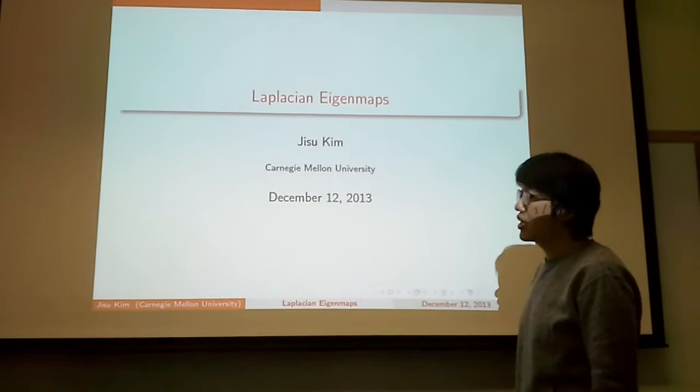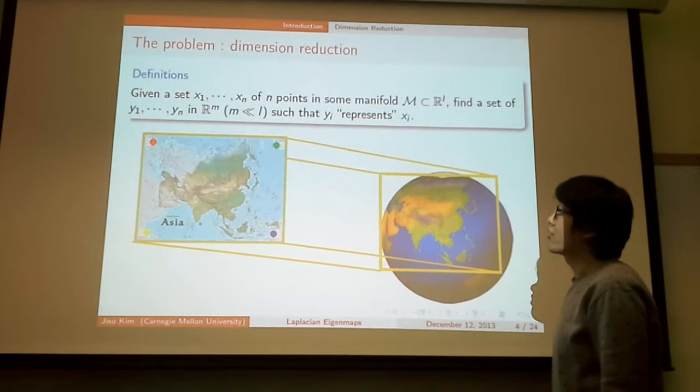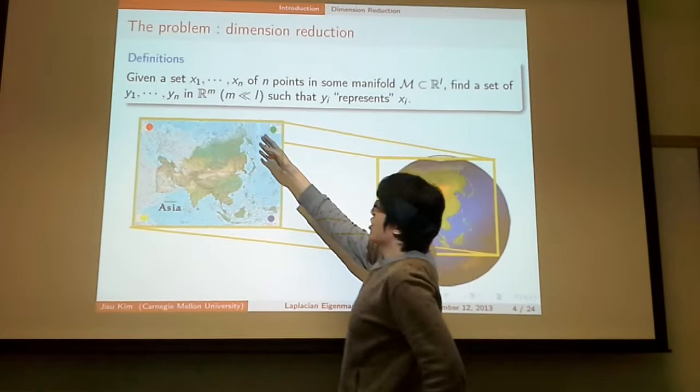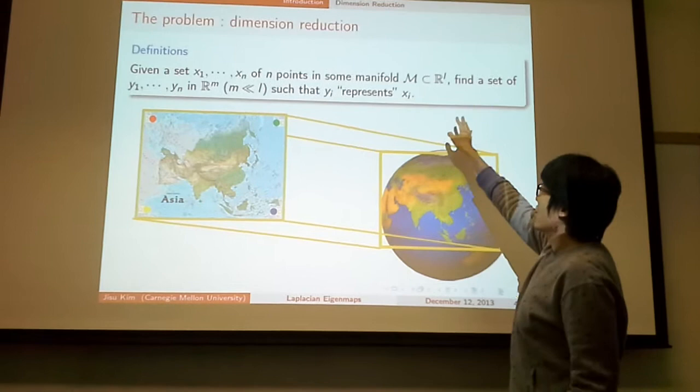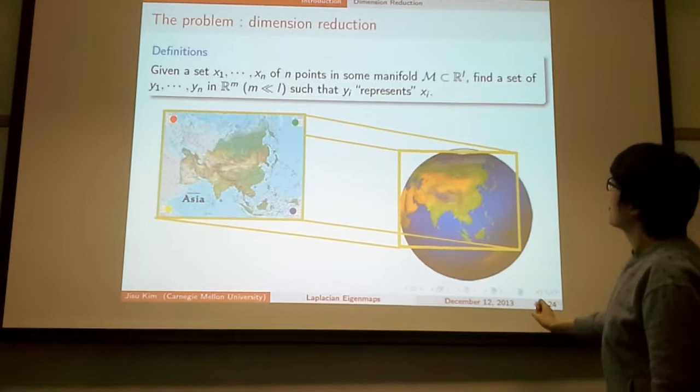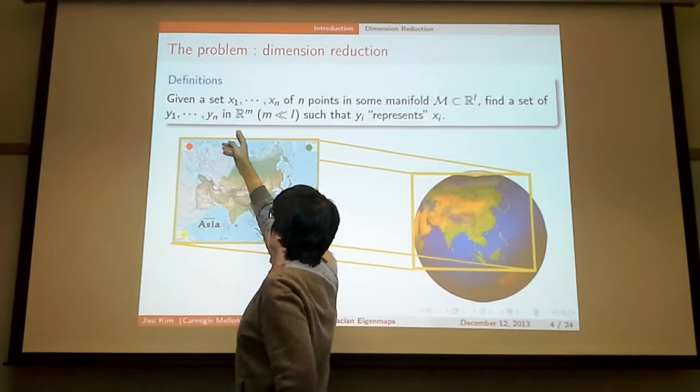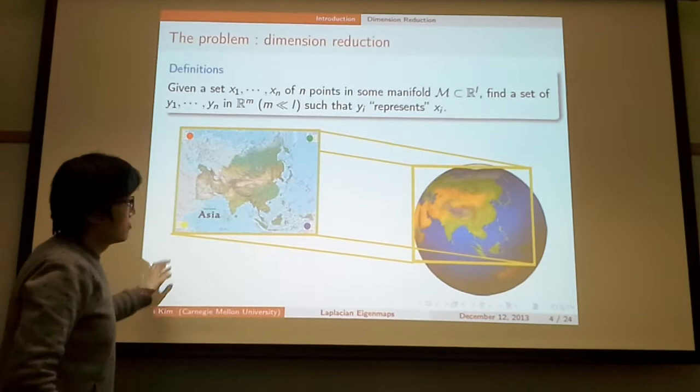Hi, my name is Jisoo Geng, and I'm going to talk to you about the Laplacian eigenmap. First, I will give you some introduction. Our problem is, given a set of n points that lies on some manifold that is embedded in large dimensional Euclidean space, find a set of y1 to yn that lies on low-dimensional Euclidean space, such that yi represents xi in some way.